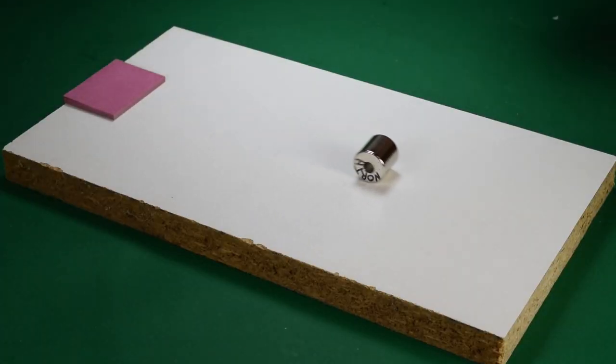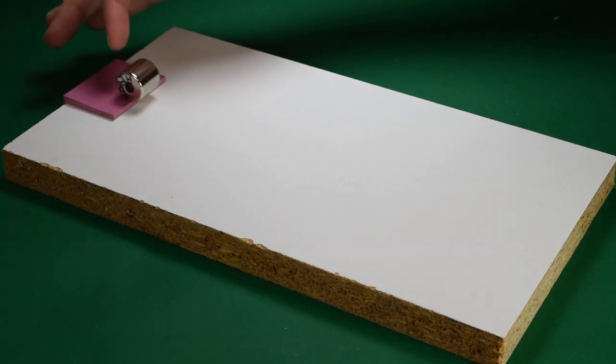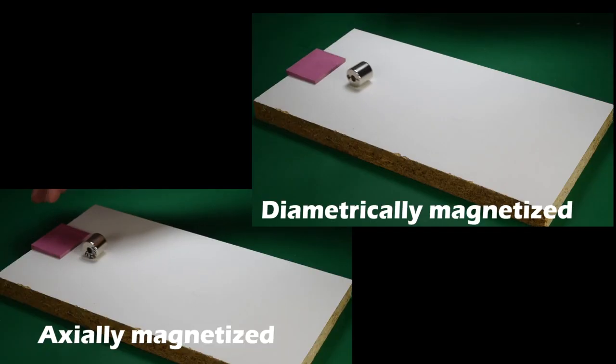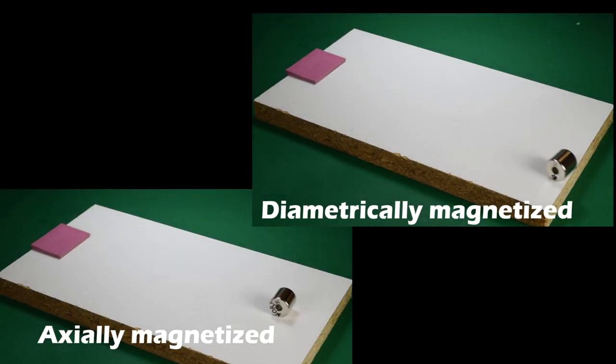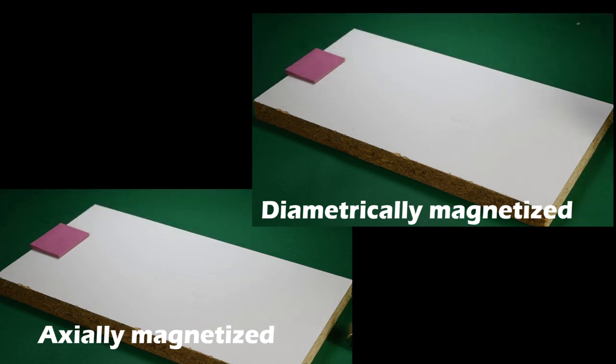When we roll an axially magnetized magnet in the same way, it doesn't wobble at all. In fact, this serves as a nice baseline to compare to. An axially magnetized magnet rolls smoothly at a constant speed, while a diametrically magnetized magnet speeds up and slows down.